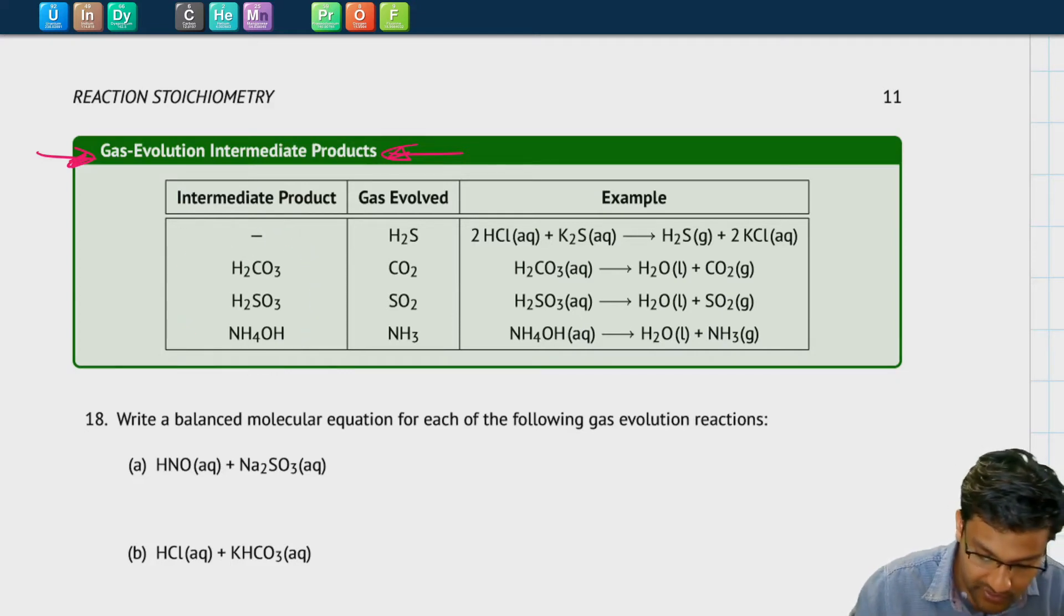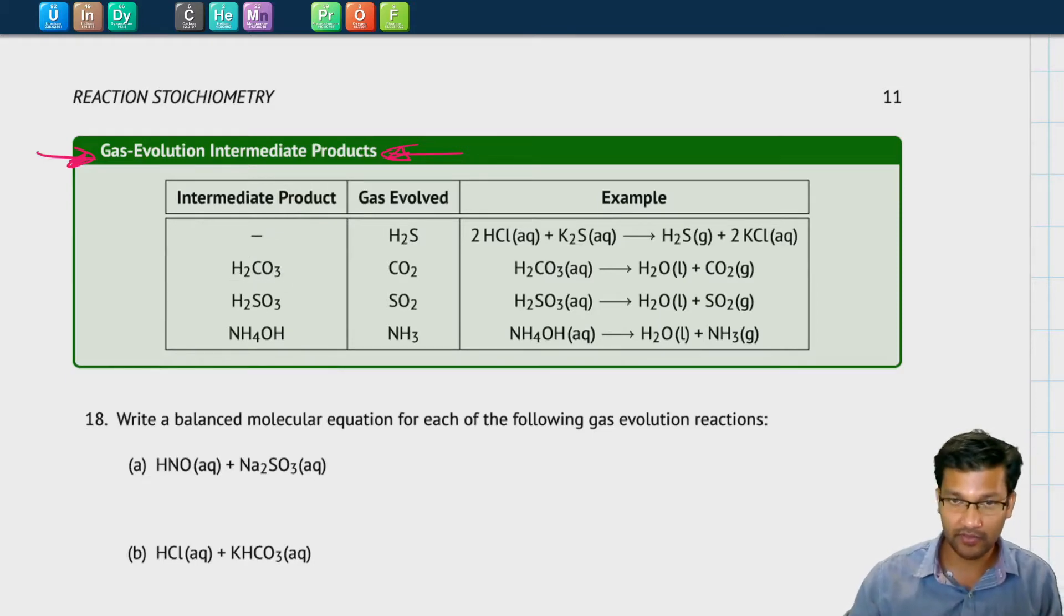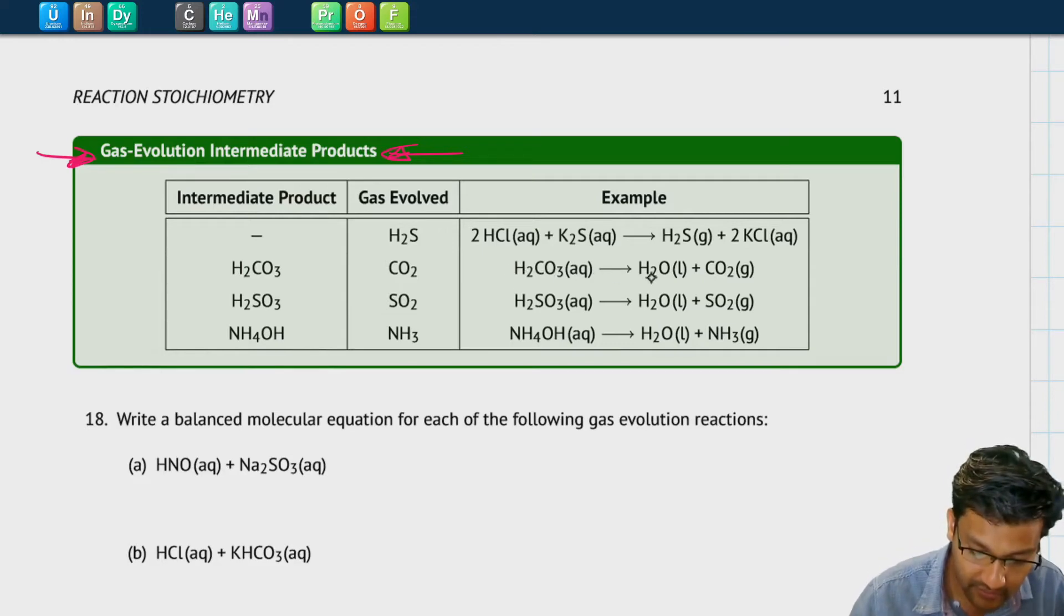If for example you see H2CO3 formed as a product in one of these reactions, note that H2CO3 can break down to form water and carbon dioxide gas and so the bubbles that you see will be of carbon dioxide gas.